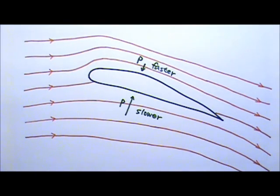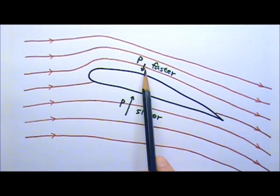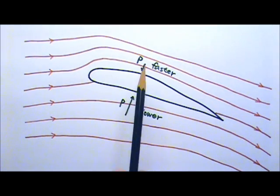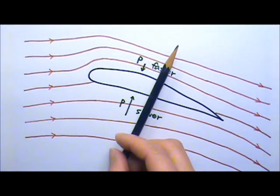According to Bernoulli's principle, the faster flow above means lower pressure above the wing, and the slower flow below means higher pressure below the wing. This pressure difference is what provides the lift force to the wing.